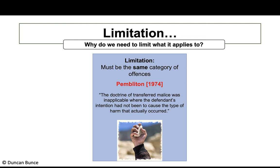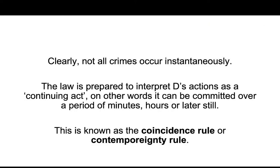There is a limitation to transferred malice: it must be for the same category of offences. The relevant case is Pembleton. If someone throws a snowball at an intended victim, misses, and it hits a window, smashing it, the mens rea for criminal damage — a property offence — is significantly different from the original mens rea aimed at a person. The law, per Pembleton, will not allow the mens rea to transfer to a different category of crime entirely, so there is no liability.